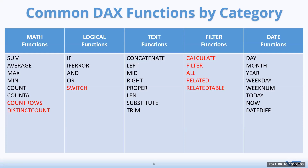Text functions are the same — extracting from left, mid, right, changing text format, substituting, trimming, and concatenating text. What is completely new are the filter functions: CALCULATE, FILTER, ALL, RELATED, and RELATED TABLE. Date functions like DAY, MONTH from a date are similar to Excel. Let's dive into Excel to see how to add Power Query and Power Pivot, and how to create calculated columns and measures using DAX.